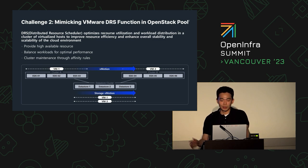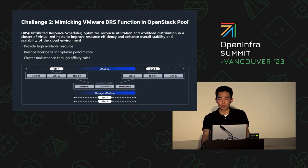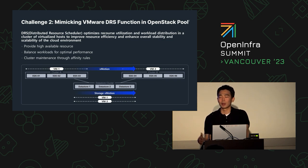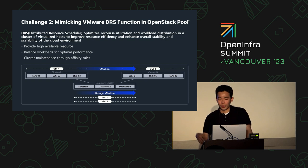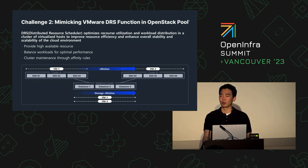DRS — Distributed Resource Scheduler — is a feature of VMware within vSphere that optimizes resource utilization and workload distribution across a cluster of virtualized hosts. It's essentially a packaged solution combining load balancing, server group clustering, and cluster management — including affinity and anti-affinity group policies. It provides optimization for administrators to improve resource efficiency, overall stability, and scalability.